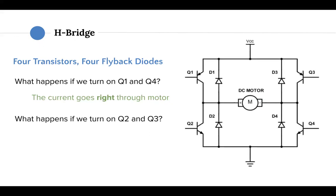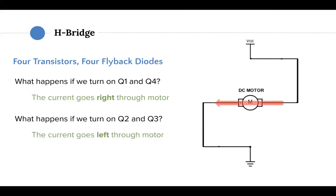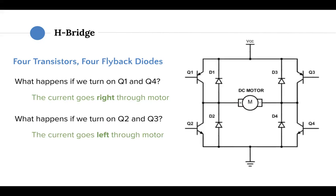So what happens if we turn on Q2 and Q3 instead? Well, due to the exact same reasoning, but applied to Q2 and Q3, the current will go left through the motor. Please take a moment to understand that for yourself.